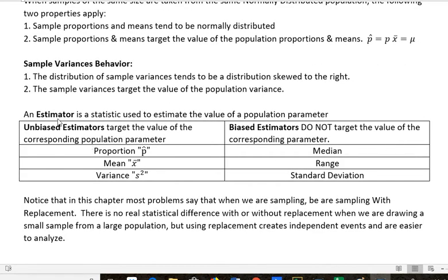An estimator is a statistic that's used to estimate the value of a population parameter. Remember parameter P, population P, statistic sample SS. Unbiased estimators actually target the value of the corresponding population parameter.